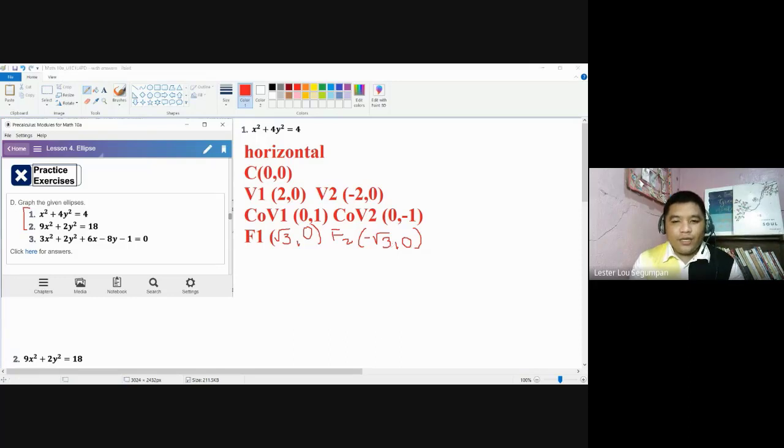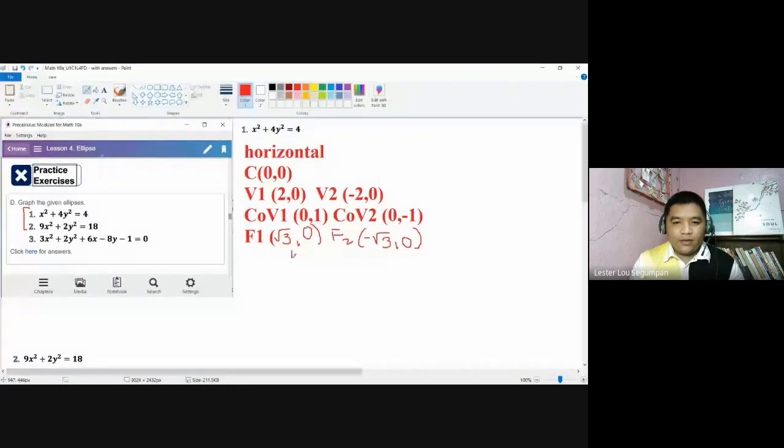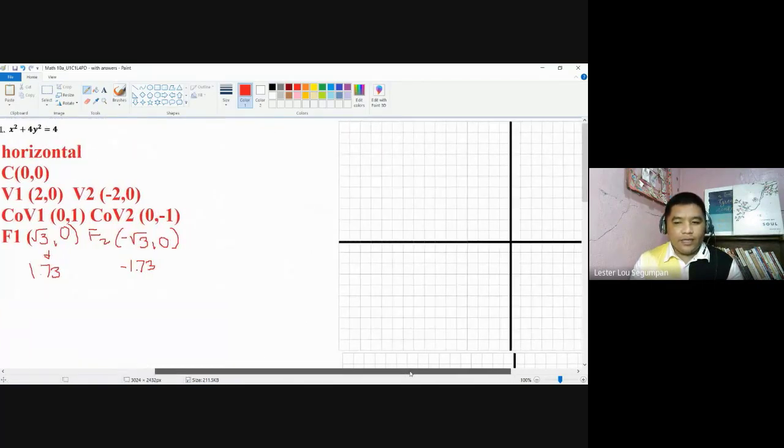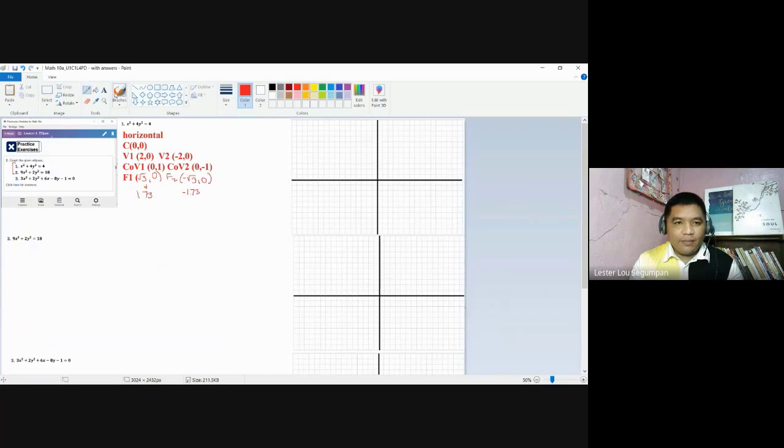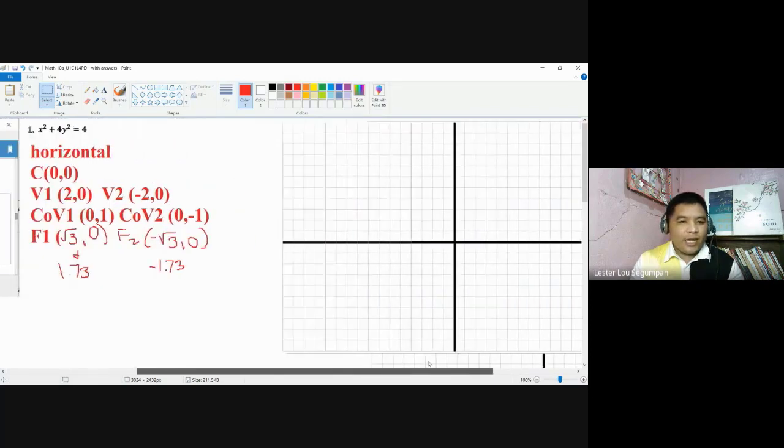Well, square root of 3 is more or less equal to a value of 1.73. So we have 1.73. Now, this would become negative 1.73. So that when we graph later, we would know its position. Let's try to graph it here. This is the graph for the first. Let's move this a little bit closer since already I've solved this in the previous practice exercise.